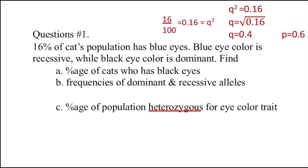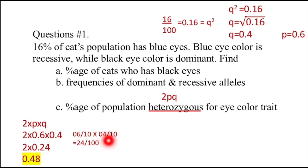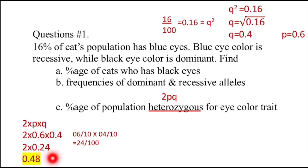Next, we calculate the percentage of the population heterozygous for the eye color trait, i.e., 2PQ. We know P = 0.6 and Q = 0.4. Multiply 2 × 0.6 × 0.4: converting decimals, 0.6 = 6/10 and 0.4 = 4/10, so 6 × 4 = 24 over 100 = 0.24, then multiply by 2 to get 0.48. We can recheck by placing all values in the genotype frequency equation to confirm they sum to 1. So 48% of the population is heterozygous for the eye color trait.